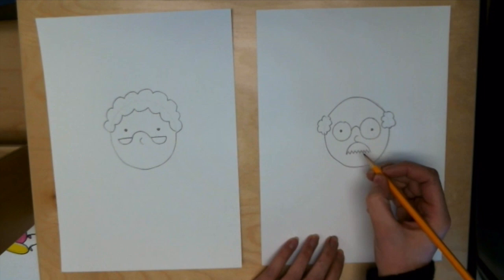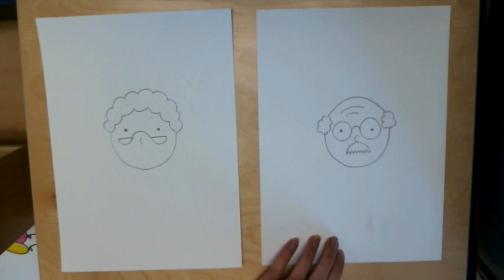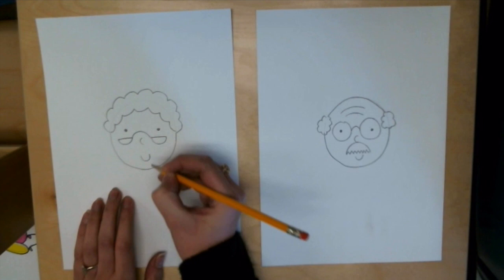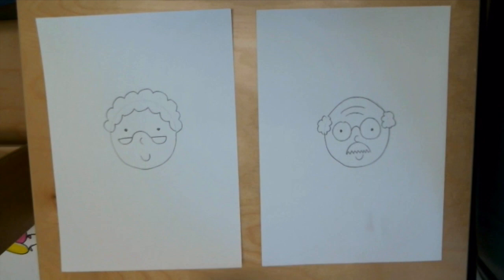I'm gonna also give this grandpa some forehead wrinkles by making two lines on his forehead. Now I'm gonna give him a smile. So now we've got the heads of our hundred year old people.